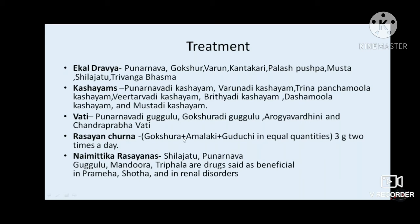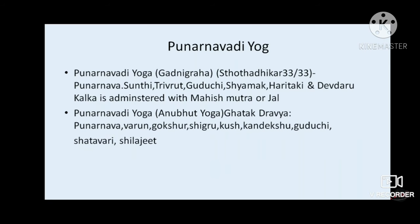Rasayana churna is used judiciously in diabetic kidney disease because once the channels are cleared, we need to nourish the organ. Rasayana churna consists of gokshura, amalaki, and punarnava mixed in equal quantity, given in a dose of 3 grams twice a day. In Ayurvedic classics, the combination of shilajit, punarnava guggulu, mandura, and triphala is called naimittika rasa and dravya for prameha and kidney disorders.